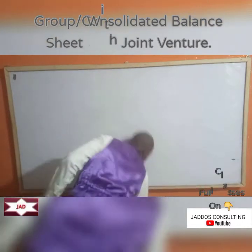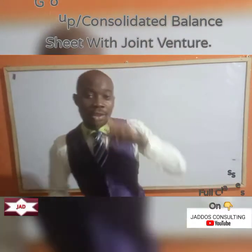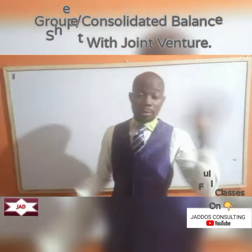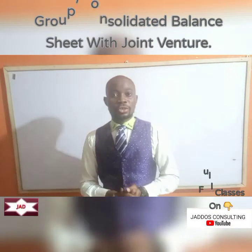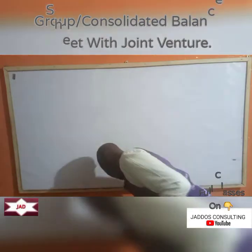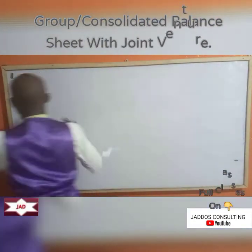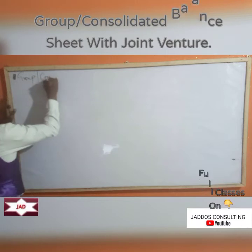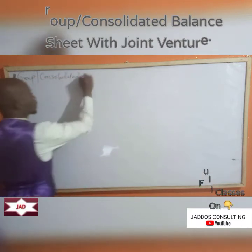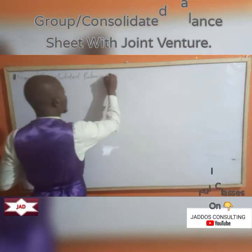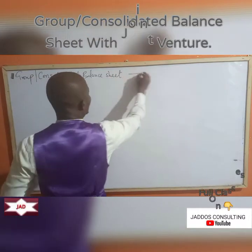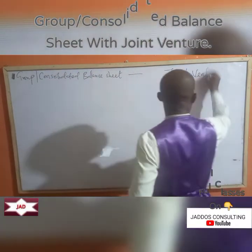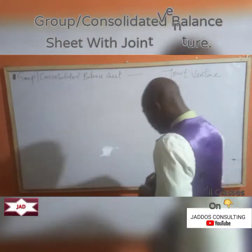Remember, we are still on the group consolidated balance sheet. Last class we talked about associates. This class, we are looking at another one — joint venture.